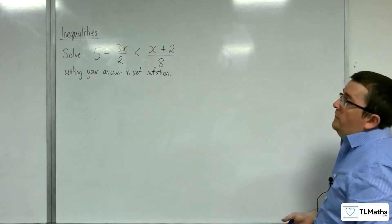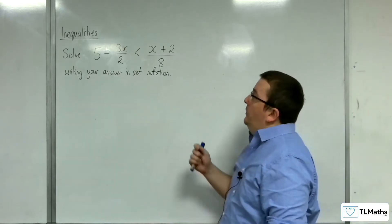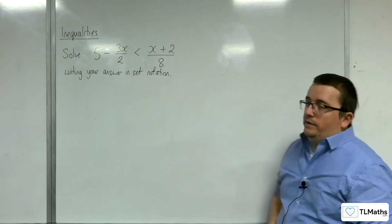In this video, we're going to solve 5 - 3x/2 < x + 2/8, writing your answer in set notation.